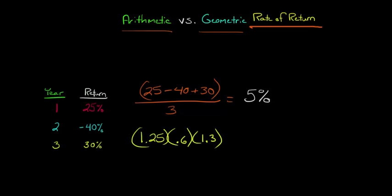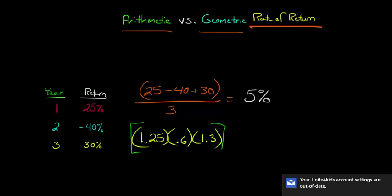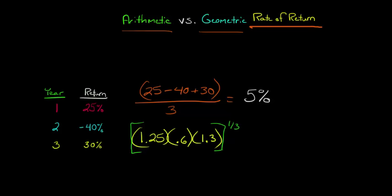We're going to take all of that, but then we're going to raise that to a power, 1 divided by the number of periods, and there's three years here. So we're going to raise it to the one-third power. And then that whole thing, we are going to subtract 1.